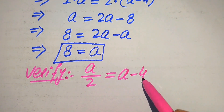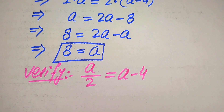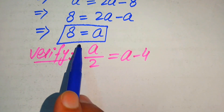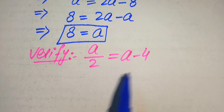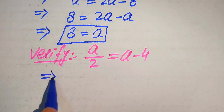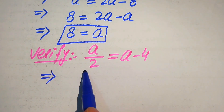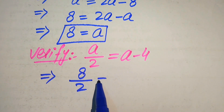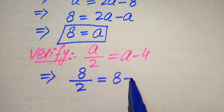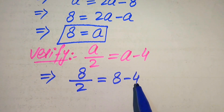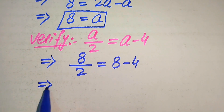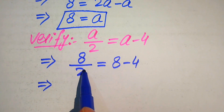Now we substitute the value a equals 8 on both sides of this equation. After substituting, it will be written as 8 over 2 is equals to 8 minus 4. On the left-hand side we need to simplify the terms.